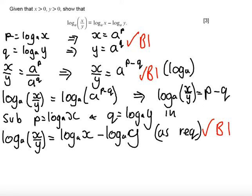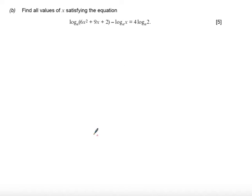Okay then let's have a look at part b of this question. Part b asks to find all values of x satisfying the equation log base a of 6x squared plus 9x plus 2 minus log base a of x is equal to 4 times log base a of 2. So first thing to do is we're aiming on both the left hand side and the right hand side to simplify them to one single log. So on the left hand side I'm now going to rewrite this using the law that we proved a moment ago, and I'm now going to write this as log base a of 6x squared plus 9x plus 2 all over x.